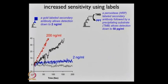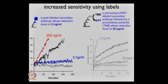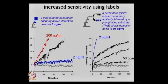Then you put in the secondary antibody, which has horseradish peroxidase in it. The horseradish peroxidase then acts on a substrate TMB to form a precipitate. If you do that, we can actually go down to 50 picograms per mil — from 2 nanograms per mil here, we go all the way down to 50 picograms per mil.